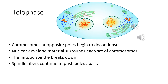The last phase is the telophase. Chromosomes at the opposite poles begin to decondense. Nuclear envelope material surrounds each set of chromosomes. The mitotic spindle will break down and the spindle fibers continue to push the poles apart. Because in the anaphase the chromosomes were pulled apart, in telophase they begin to decondense and the nuclear envelope material surrounds each set of chromosomes.